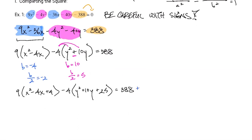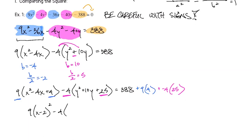We add 9 × 4 = 36 for the x side, and −4 × 25 for the y side. So we get 9(x−2)² − 4(y+5)² = 388 + 36 − 100 = 324 on the right-hand side.